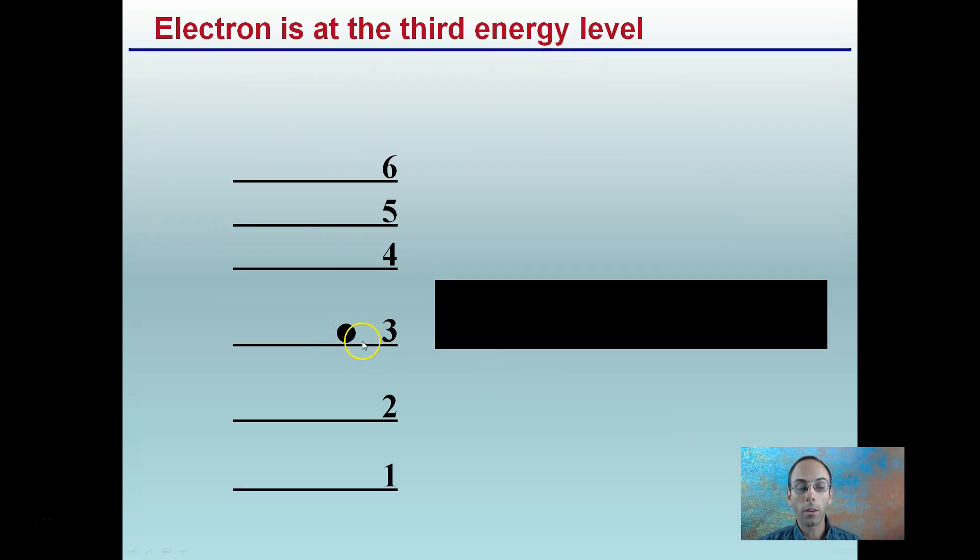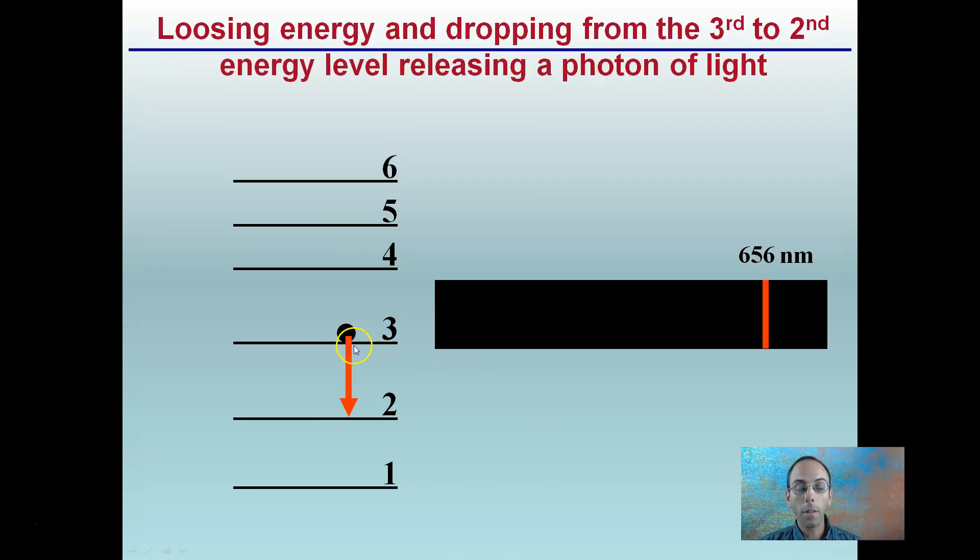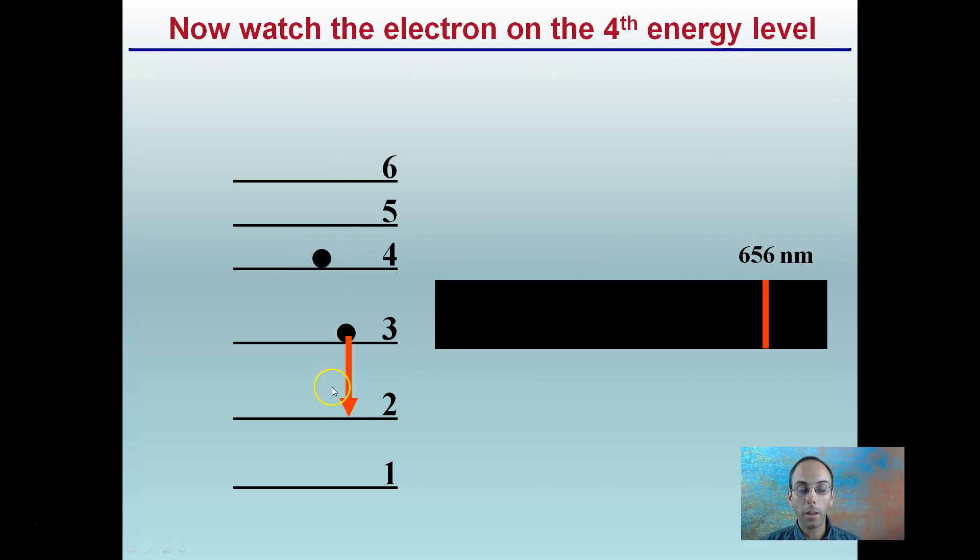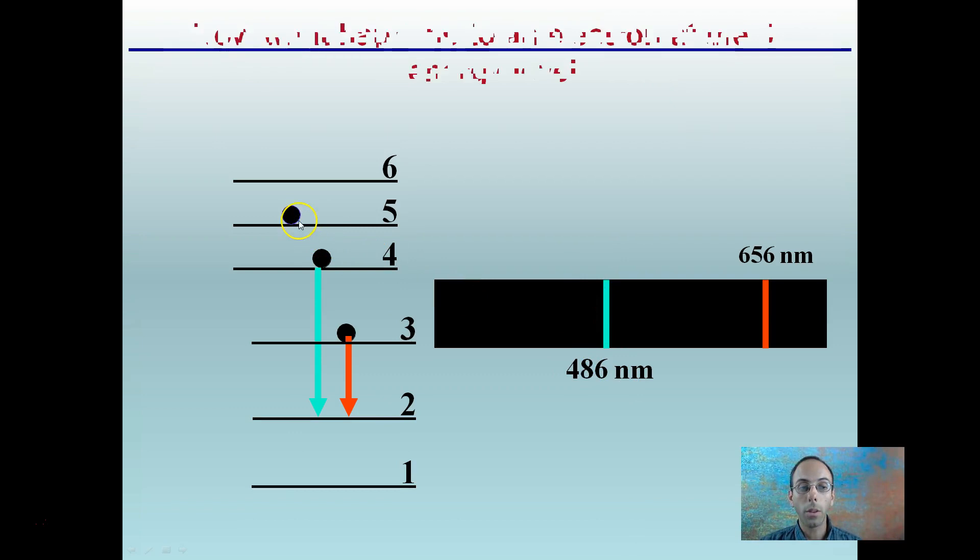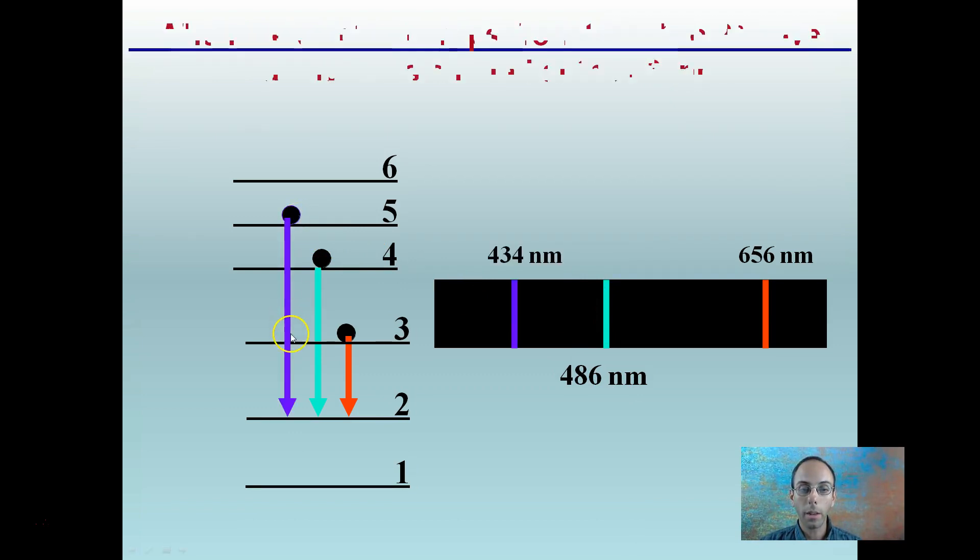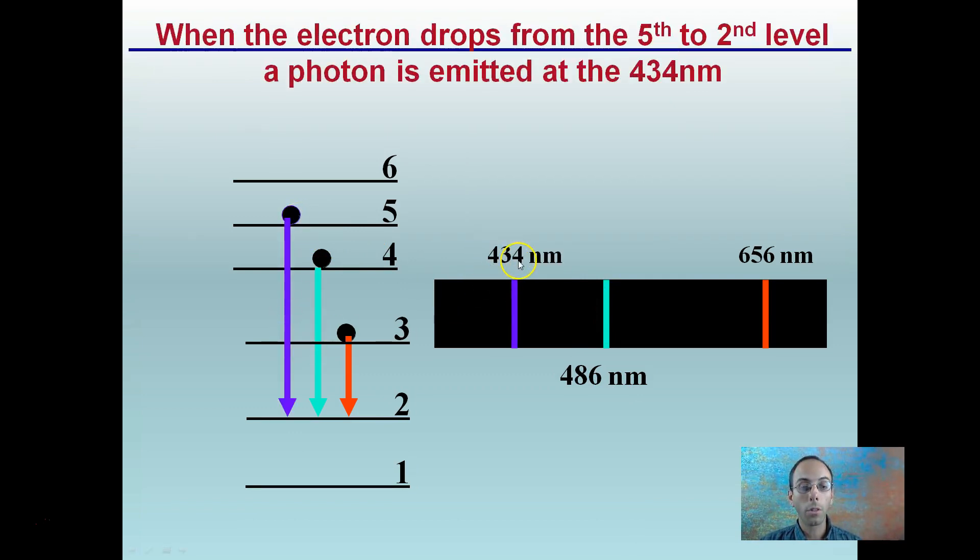So let's put that into an example. Here we have an electron at the third energy level. We're going to drop down to that second energy level. When it drops down to that one level there, it emits a red wavelength, which is 656 nanometers. Now let's take an electron at the fourth energy level and drop it down to the second energy level. We see that we'll give off 486 nanometers, this kind of greenish color. And for our fifth energy level, we drop that down. We see 434 nanometers, that purple spectrum.